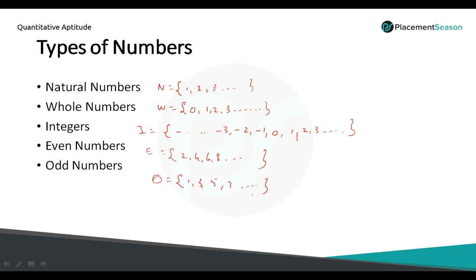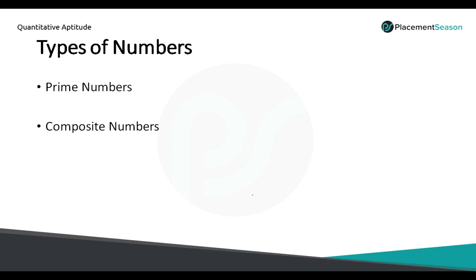We have two more types of numbers to discuss: prime numbers and composite numbers. Before discussing prime and composite numbers, we should know what is meant by factors and multiples. For example, take the number 8. If I divide this number by 1, I don't get any remainder. If I divide by 2, I don't get any remainder. If I divide by 3, I will get a remainder.